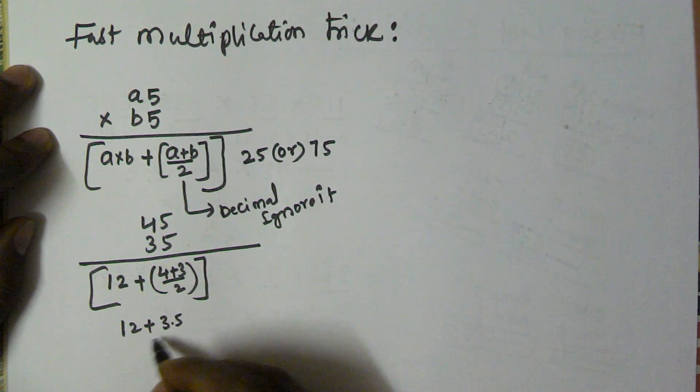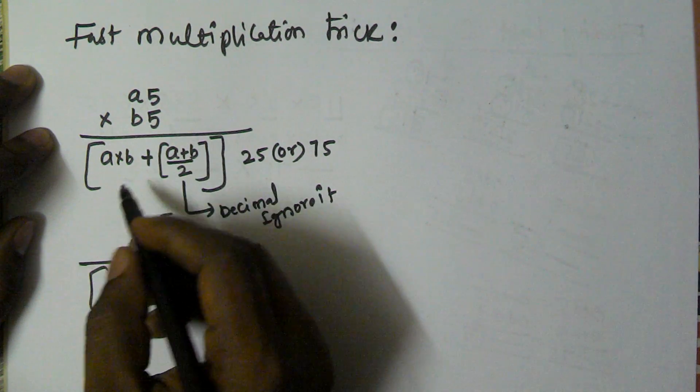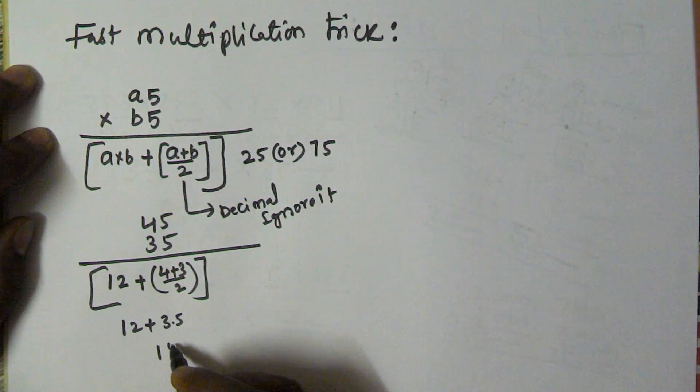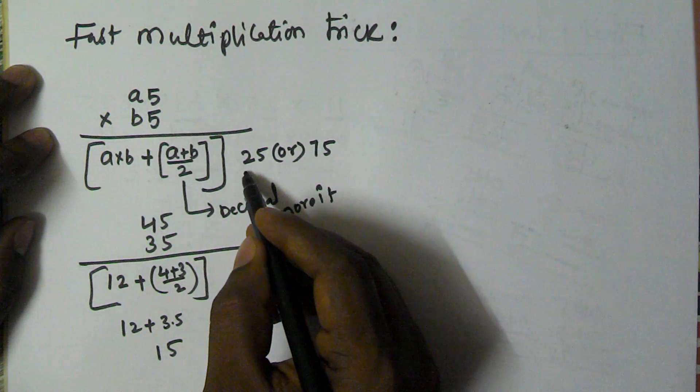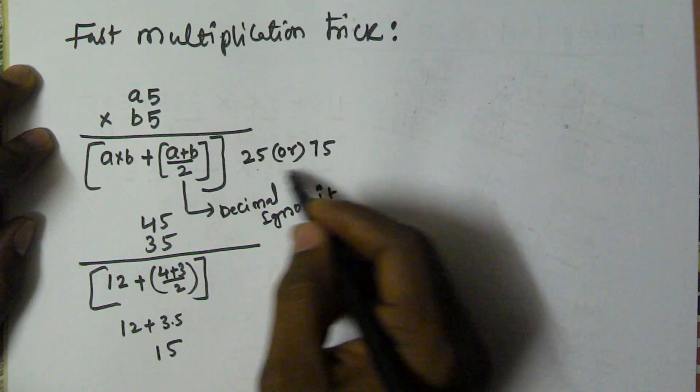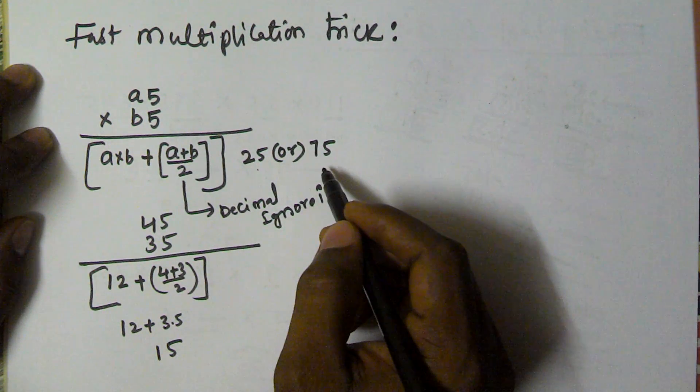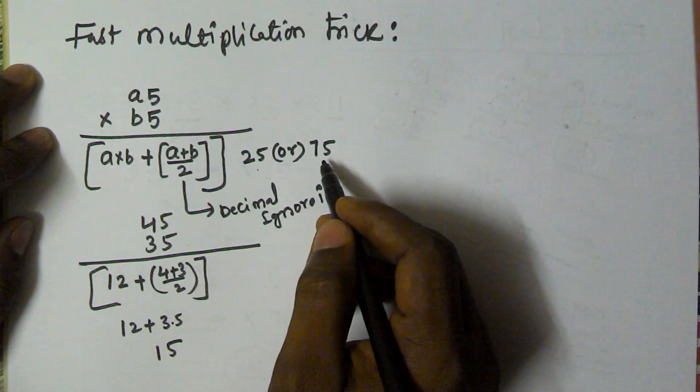So 12 plus 3 is 15. Here we are getting 15, and then here we will get 25 or 75. So how we will decide 25 or 75?